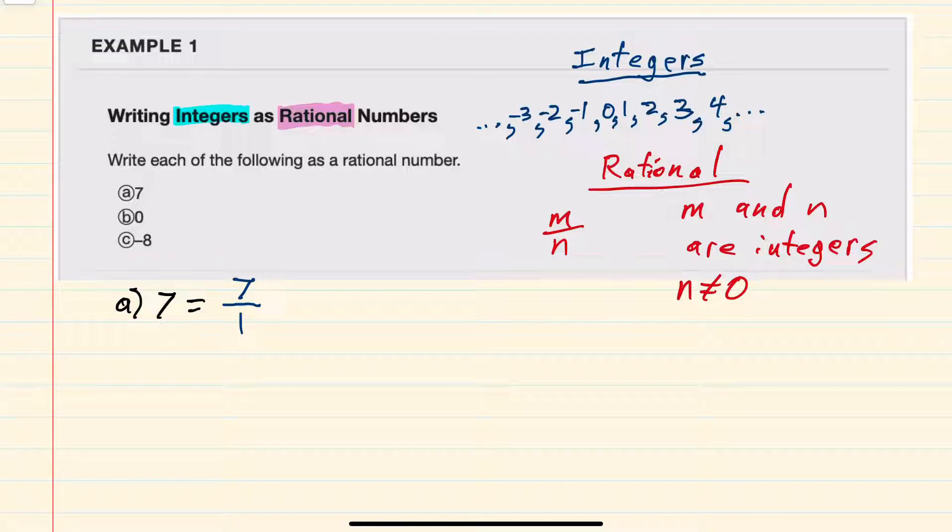Although there are certainly other ways to write 7 as an integer over an integer, such as 14 over 2, and so on. But since we were just asked for one, we can go with the easiest, 7 over 1.